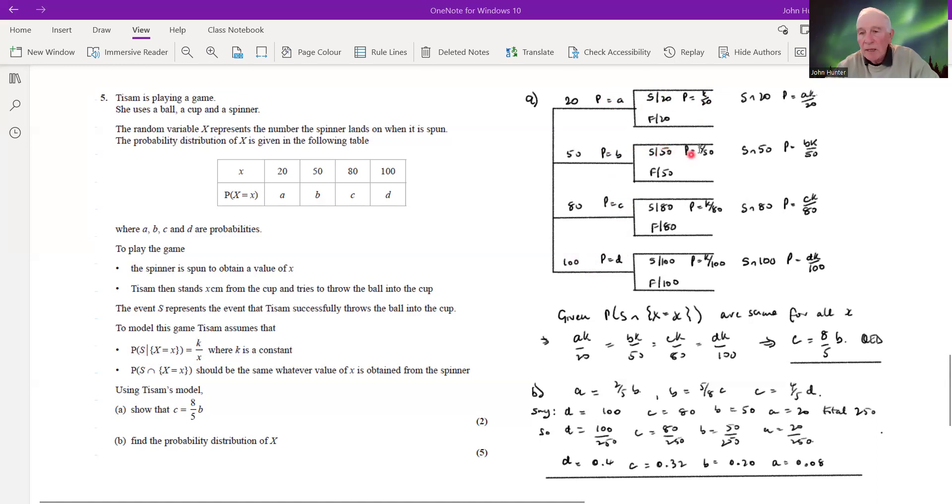And similarly k over 80 and k over 100 in this fourth case. So to complete the leaves on the probability tree, if we multiply the probability, so this is the probability of this first level times the probability of the second level, multiplying across quite simply.